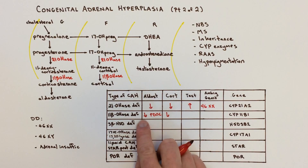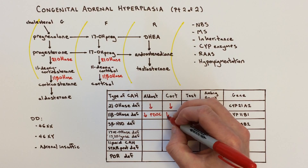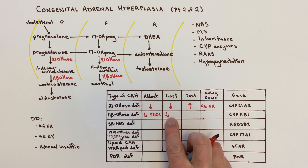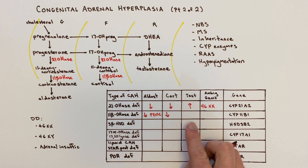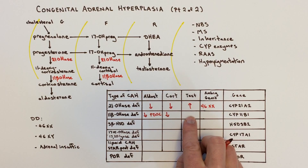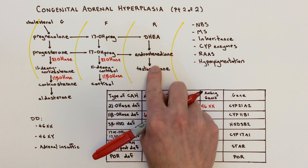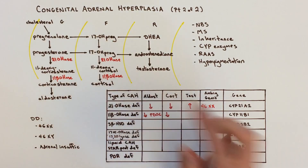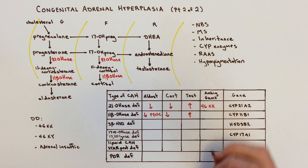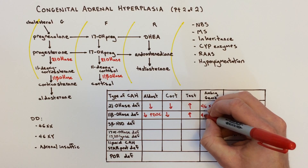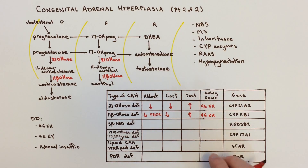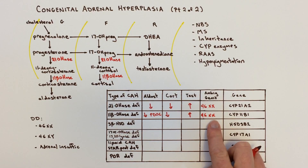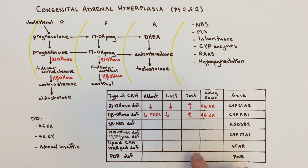This would trick you up if all you knew was the aldosterone level. With cortisol being low, there's failure to mobilize sugar in times of stress. As for testosterone, there's no problem with that pathway — indeed, we get routing to too much testosterone, leading to 46XX individuals having virilized or more male-like genitalia than they otherwise would have had without this disorder.